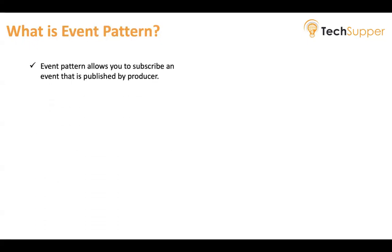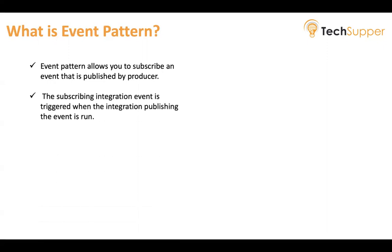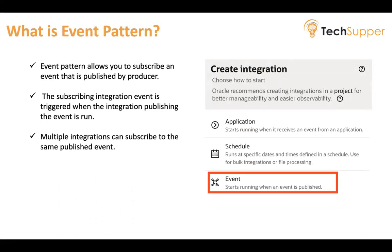A new Event Pattern has also been introduced to support subscribing to events. The event pattern allows you to subscribe to an event published by a producer. When you use the event pattern, you select which event you would like to subscribe to from the list of events you created earlier, and then build your subscriber based on that event. The subscribing integration is triggered automatically when the publishing integration runs — the subscriber fires as soon as the producer fires. Multiple integrations can subscribe to the same event.